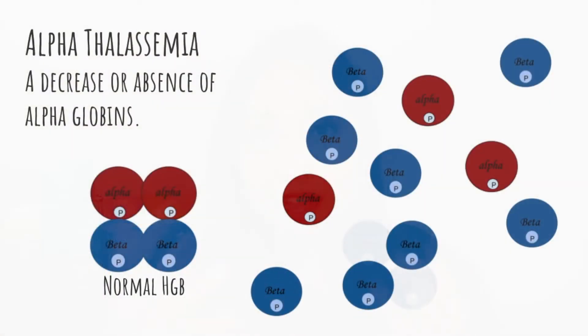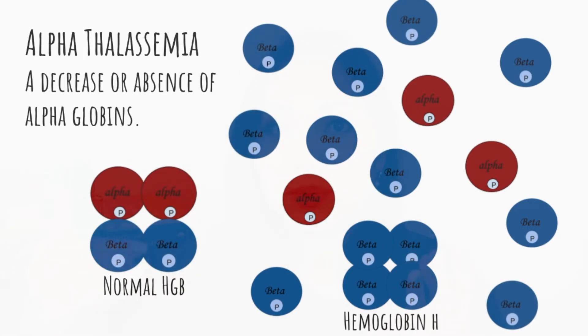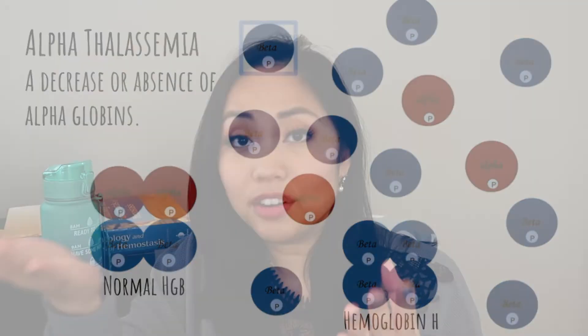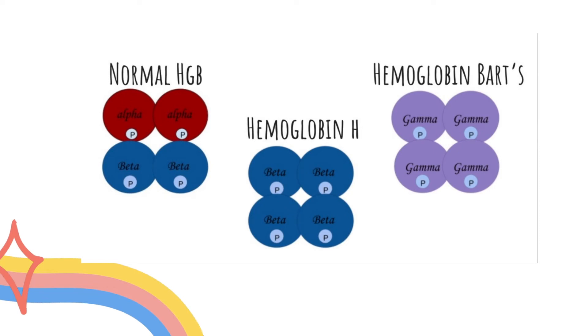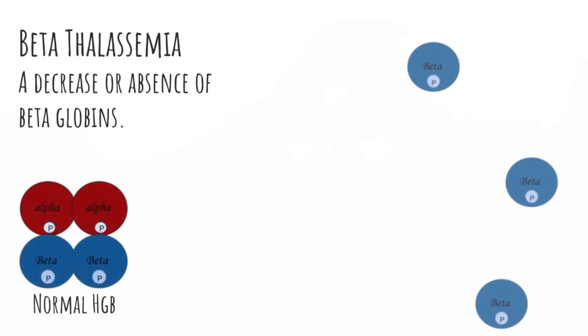Even if you have alpha thalassemia where your alpha genes don't produce as many alpha globin chains, your beta gene will continue to produce the normal amount of beta chains. Therefore you will have an abundance and imbalance of beta chains compared to alpha chains. In the case of alpha thalassemia, you will have an excess of gamma chains, which form hemoglobin Barts, and hemoglobin H, which is a tetramer of beta chains. These are useless — they can't carry oxygen and they actually shorten the lifespan of RBCs. Detection of these hemoglobins is a clue in diagnosing alpha thalassemia.